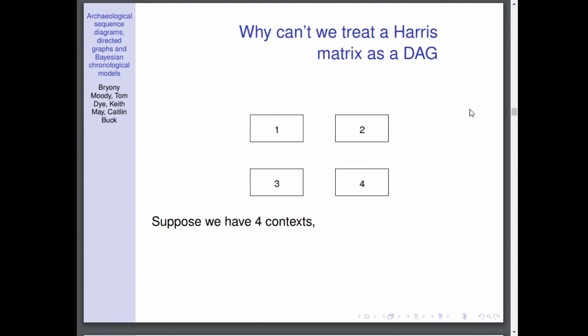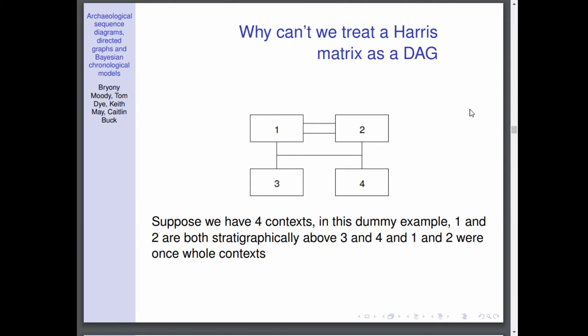So why can't we just treat a Harris matrix as a DAG? It looks like one, it has nodes, it has edges. Well suppose we have these four contexts, 1, 2, 3, and 4. In this dummy example I'm supposing that one is above three, two's above four, two's above three, and one's above four. Then suppose I'm also saying that one and two were once whole contexts.